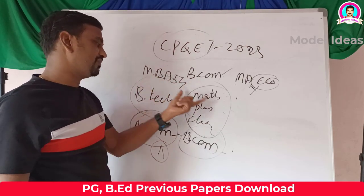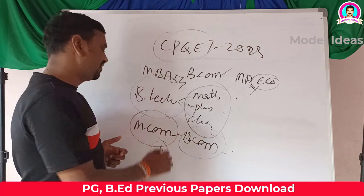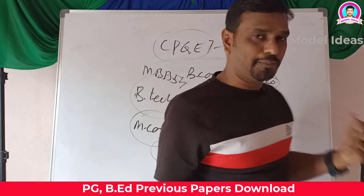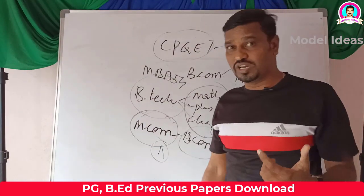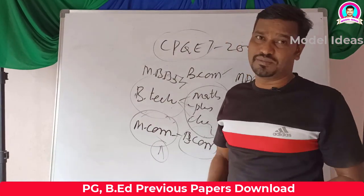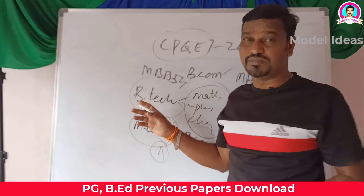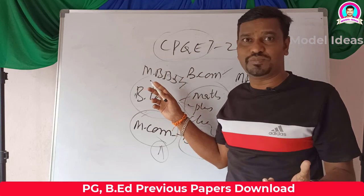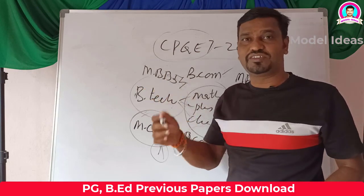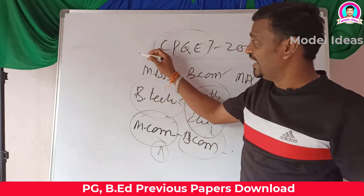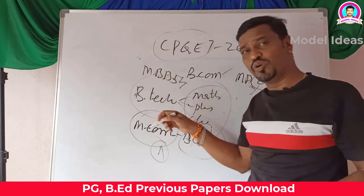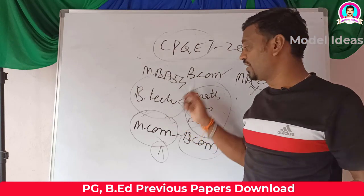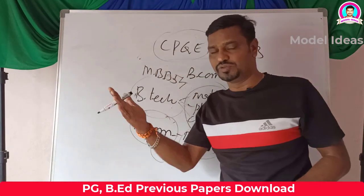MBBS and B.Tech are also in biotechnology, but in any degree, B.Com and M.Com are also very important. There are so many in-demand courses in arts: MSRM, MCJ, MHRM (Human Resources Management), MTM (Master of Tourism Management). In this situation, we can take any degree. M.Com also accepts any degree.